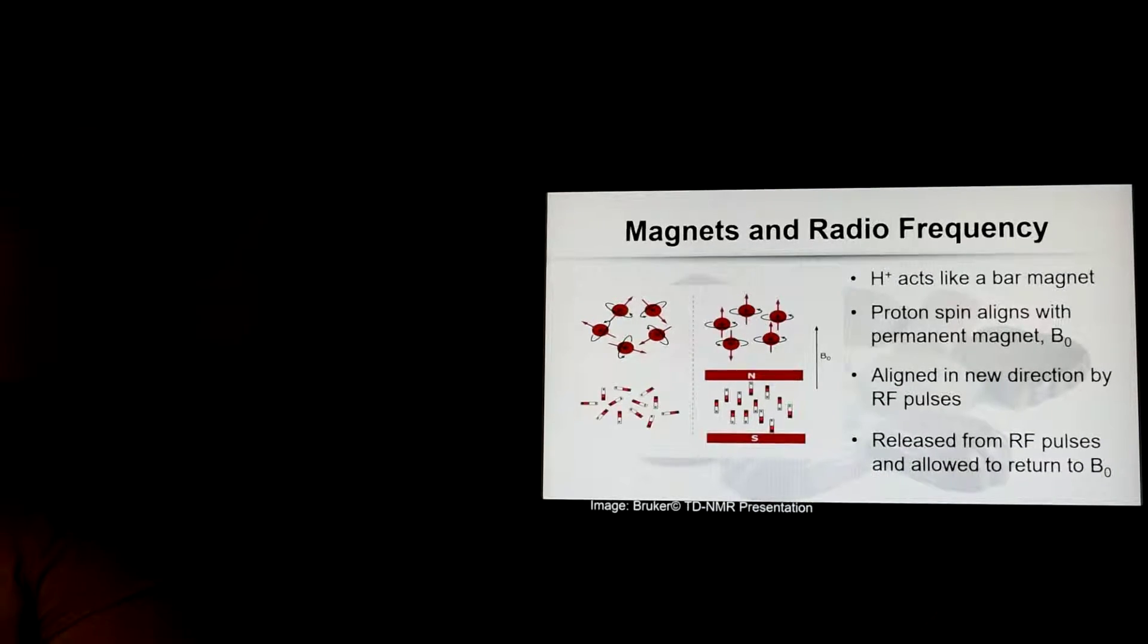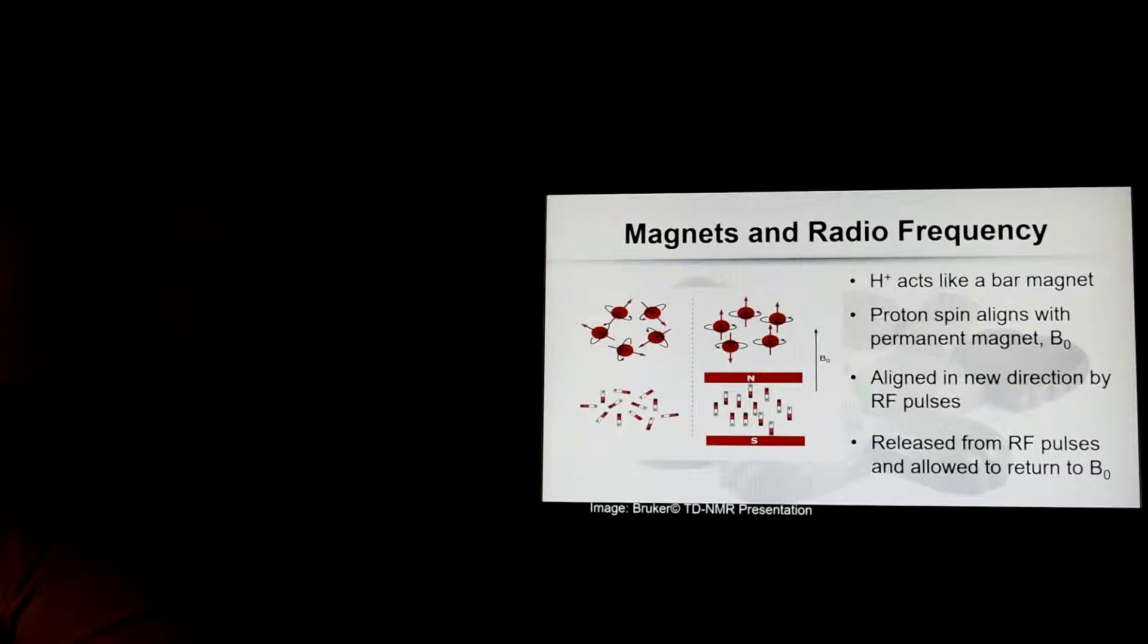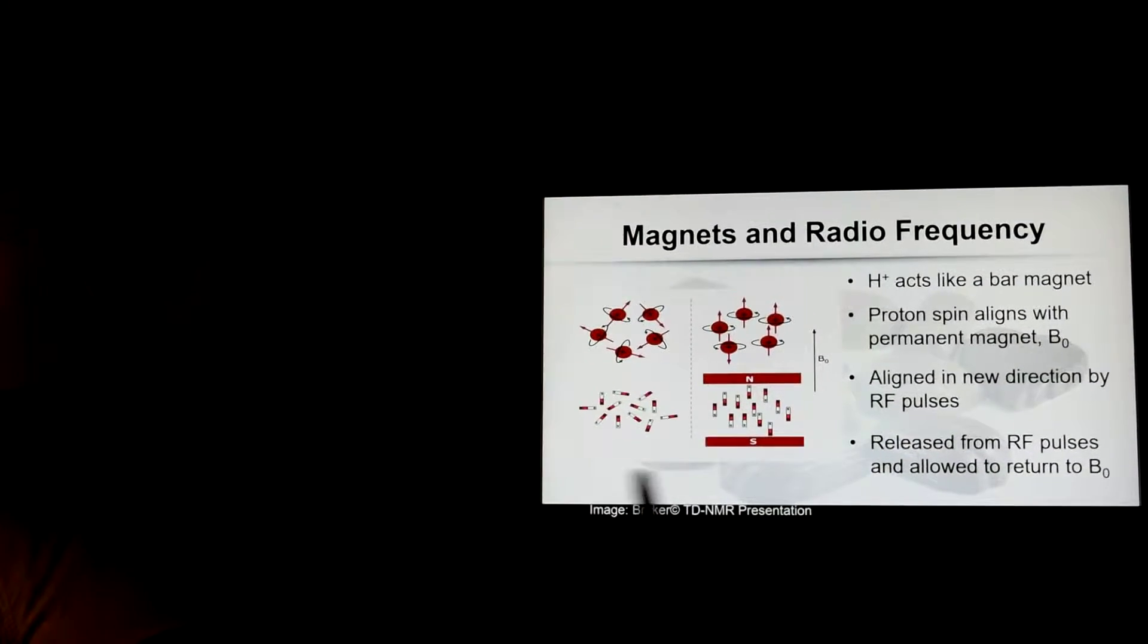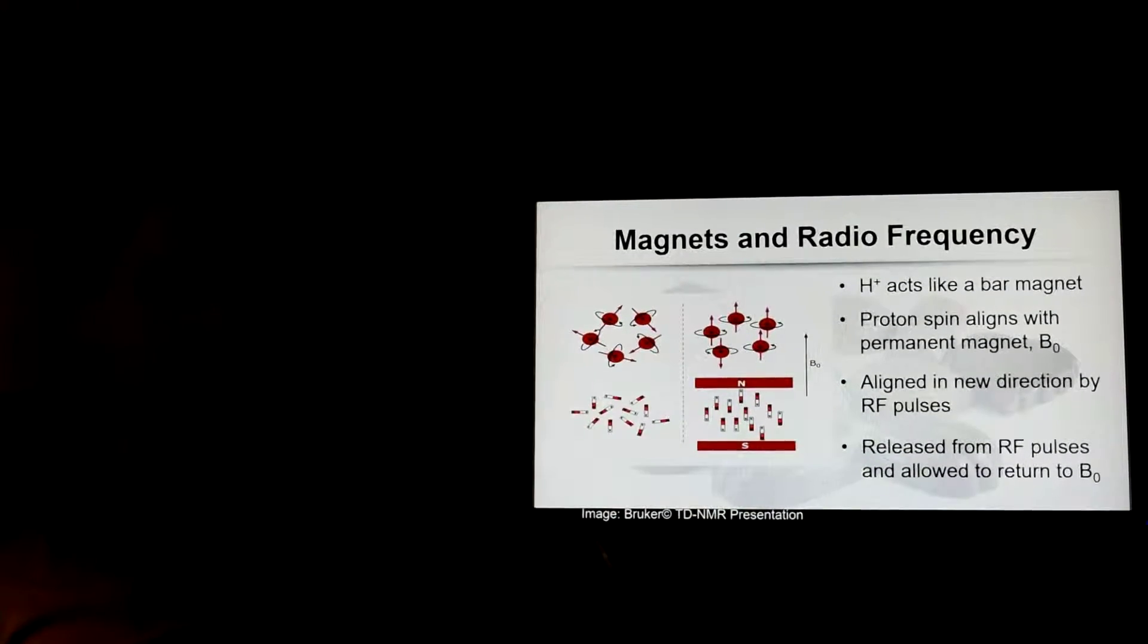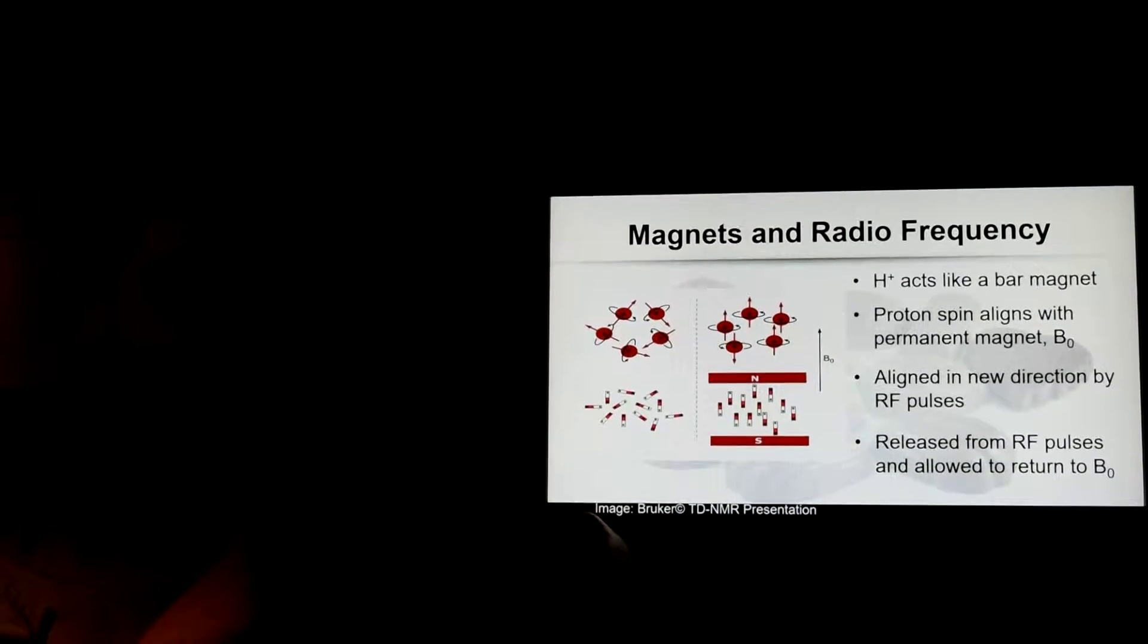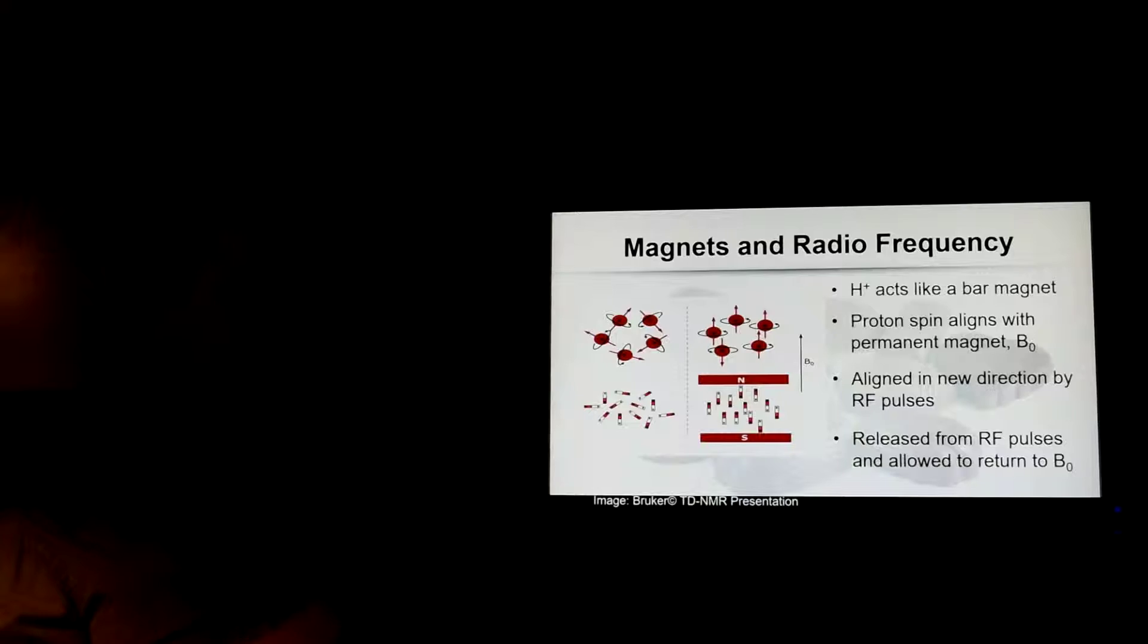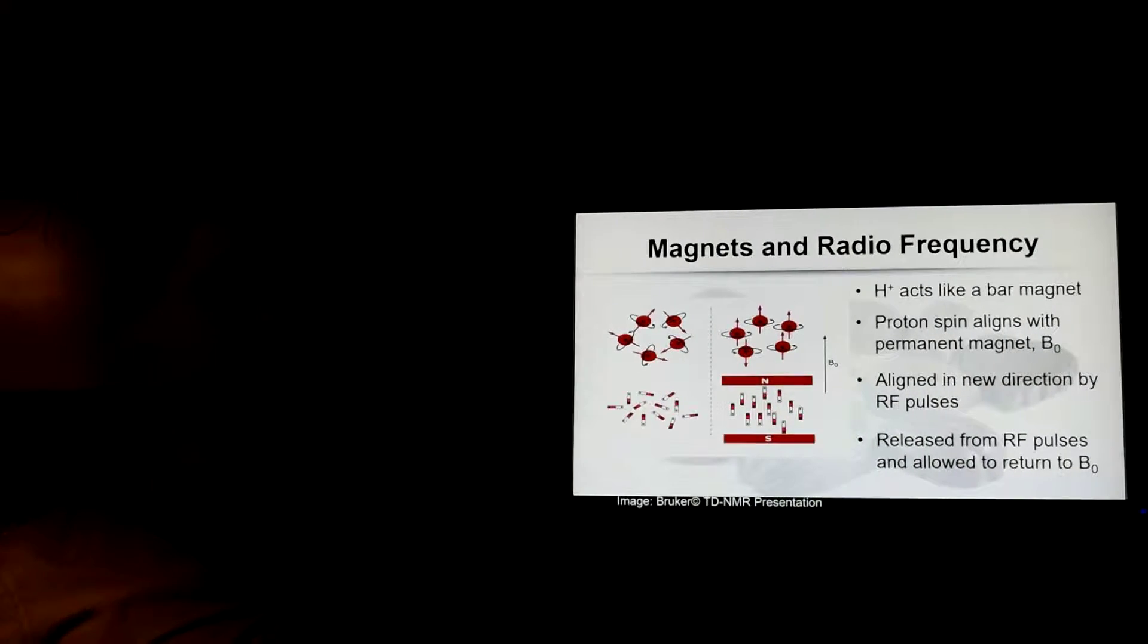So how it works? Well, protons, or hydrogen, act like a bar magnet. It spins on itself, and when placed inside a magnetic field, it will line up with that direction of the field. We'll call it direction B0. We then hit it with a radio frequency pulse to tilt it in another direction, and then we let it come back. And the time it takes to come back is what we measure.